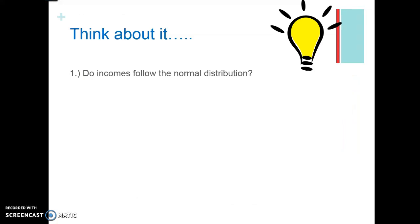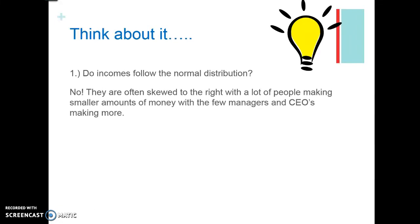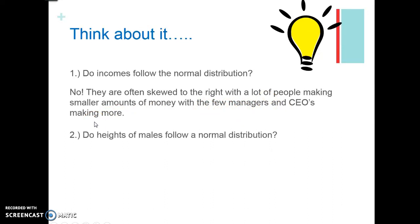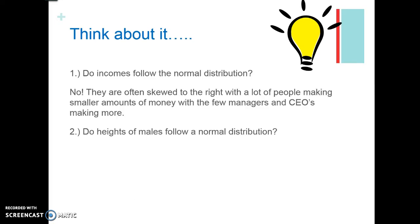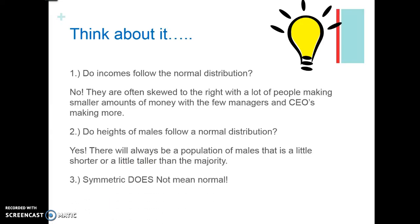Do you think incomes follow a normal curve? The answer is no. They're often skewed to the right because a lot of people make smaller amounts of money, and then you have a few managers, CEOs, or owners making a lot more. How about heights of males? That answer is yes — there's always a population of males that's a little taller or shorter. You have males in the middle at the mean, and then a few that are a little taller and a few that are a little shorter.